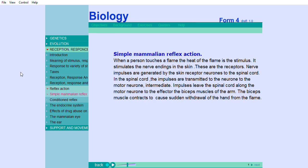Simple mammalian reflex action: When a person touches a flame, the heat of the flame is the stimulus. It stimulates the nerve endings in the skin. These are the receptors. Nerve impulses are generated by the skin receptor neurons to the spinal cord.